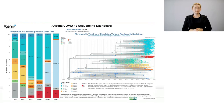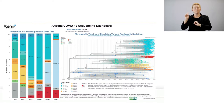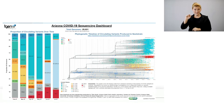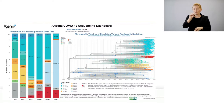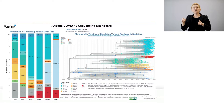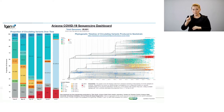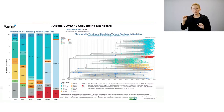We partner very closely with TGen, and from their dashboard we've seen delta increase from about 3 percent of sequences in May to about 74 percent. The B.1.617.2 bar — that is our delta variant — and you can see that it has increased significantly in the past two months.